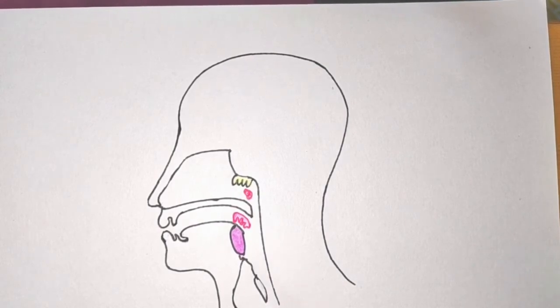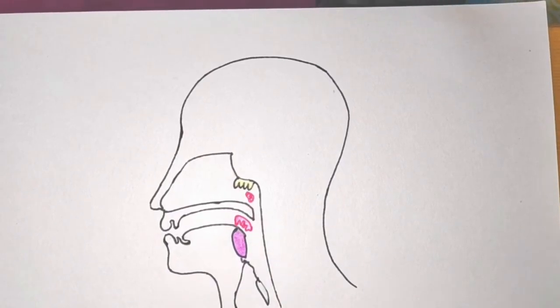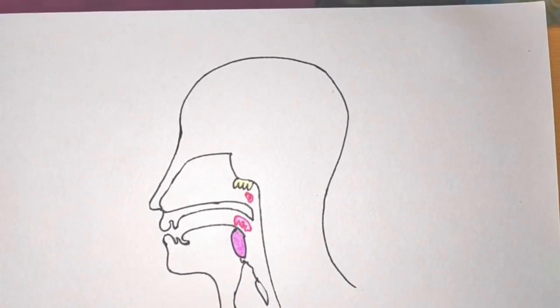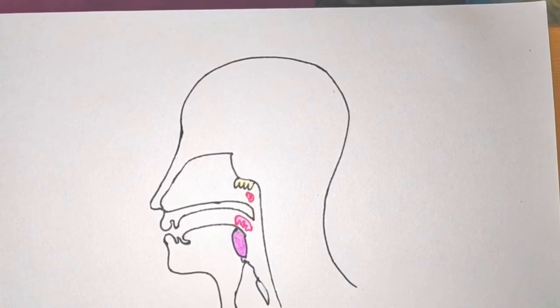It forms lymphocytes and plasma cells. So this is all about Waldeyer's ring. I hope you have liked this lecture. If you like it, then give a thumbs up and subscribe to my channel. I also have an Instagram account. I will put the link in the description box. Thank you everyone, bye.